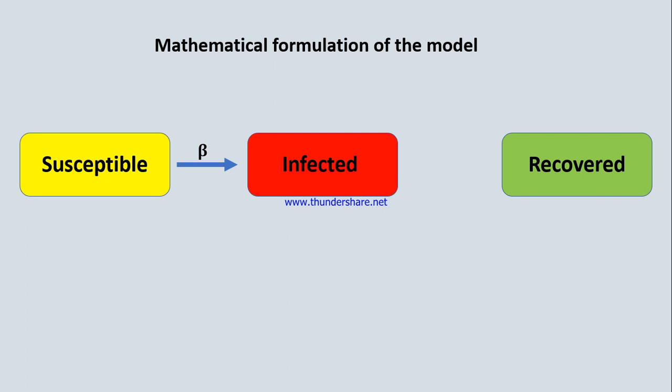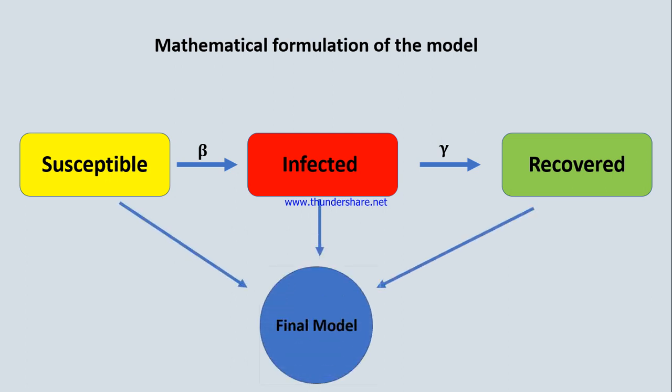Beta is the rate at which susceptible people are getting converted into infected people by acquiring the virus. The second transition — infected people getting converted to recovered when treated with vaccines or medicines — is denoted by gamma, also known as the rate of recovery. Combining all three compartments together gives us the final SIR model.